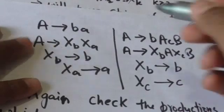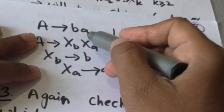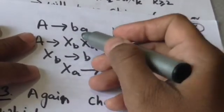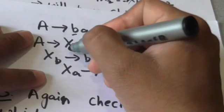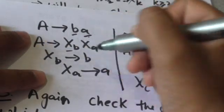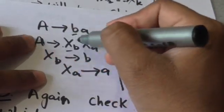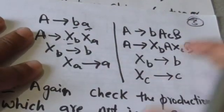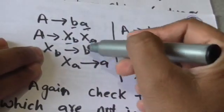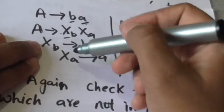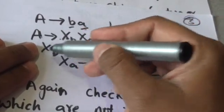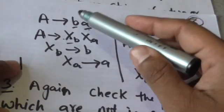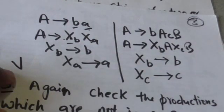For example, after removing unit productions, suppose we have a production A derives Ba. This is not in CNF. We replace terminal b by X_B and terminal a by X_A, giving us A derives X_B X_A. We also add productions X_B derives b and X_A derives a, add variables X_B and X_A to set V, and remove the original production A derives Ba from grammar G.